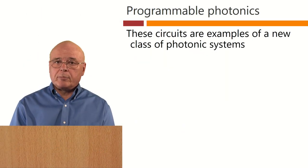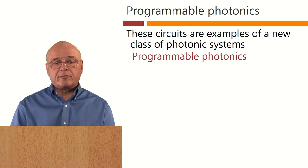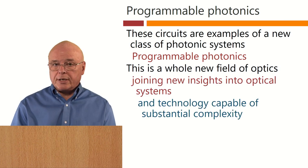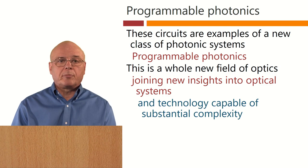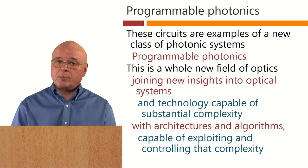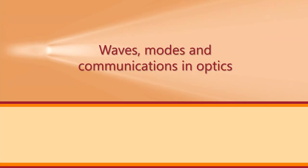These circuits we've been looking at are examples of a new class of photonic systems that we could call programmable photonics — a whole new field of optics that joins new insights into optical systems and the technology capable of substantial complexity, with architectures and algorithms capable of exploiting and controlling that complexity. These programmable circuits are certainly optics, but they're not like the optics of lenses and mirrors, and they are also much more complex than just simple waveguides or even multiple-mode waveguides. Does this mean we need another way of looking at optics? And does that have to be incompatible with how we look at more conventional optics? We do need a new way of looking at optics, but it turns out that the answer not only gives us a good way of working with these new optical systems and devices — it arguably gives us a better way of looking at the optics we currently have.